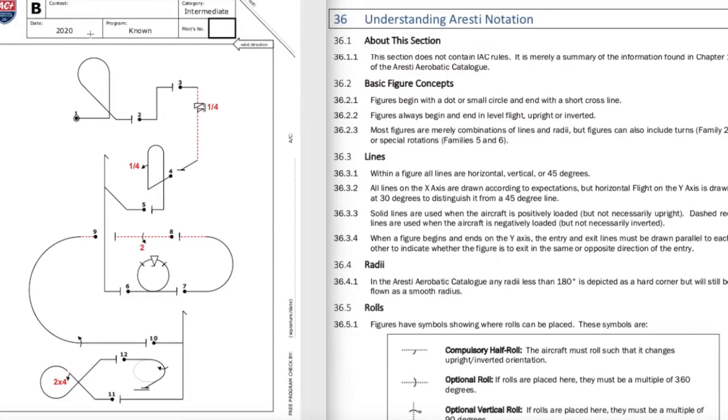On the left screen we have the 2020 intermediate known sequence and we'll talk about what this B is and all this other stuff on this page at another point in our video. And on the right we have the IAC rulebook chapter 36 understanding Aresti notation.